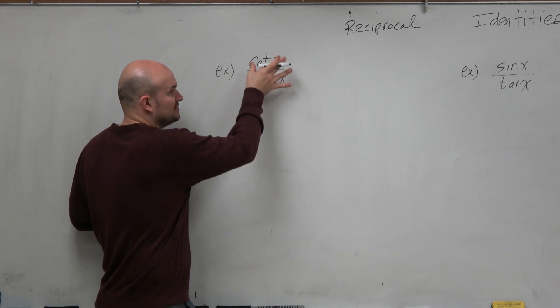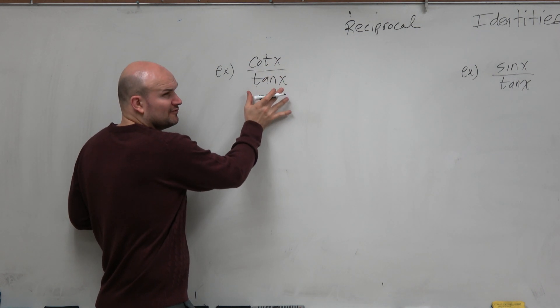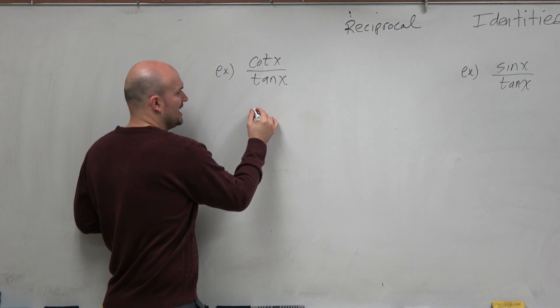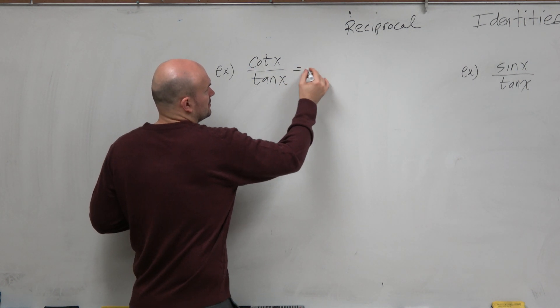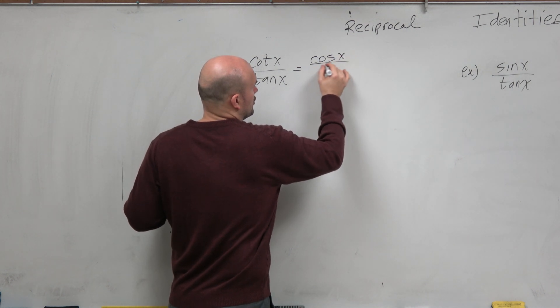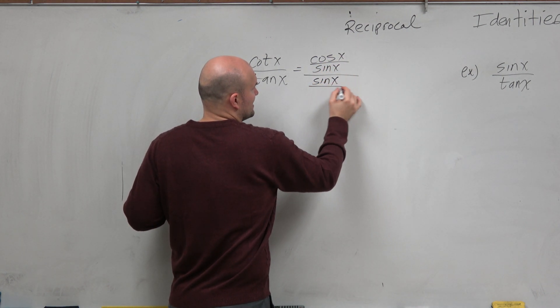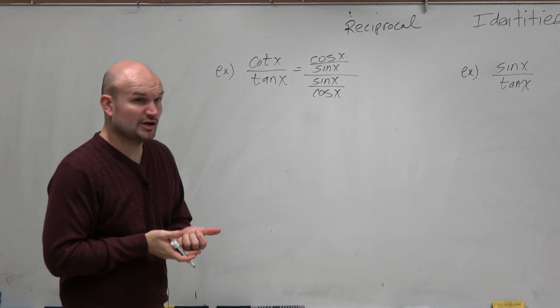But basically, you can think about these as, one thing to further understand these is let's use the quotient identities. We can rewrite cotangent as cosine of x over sine of x divided by sine of x over cosine of x. Agreed?